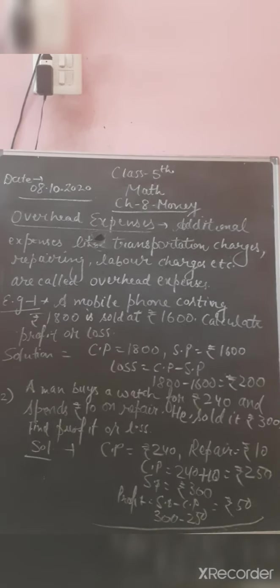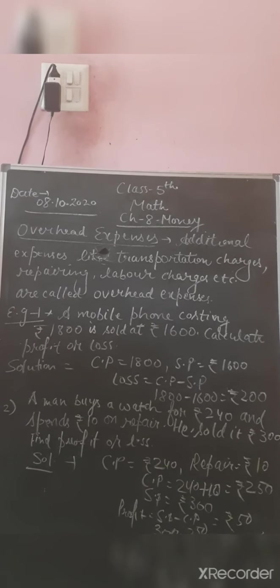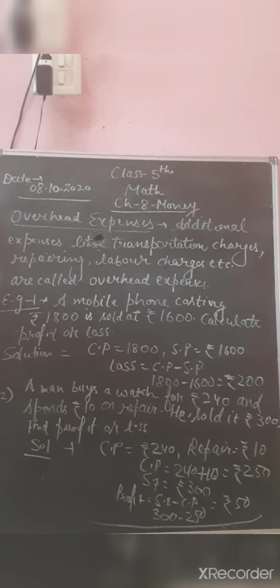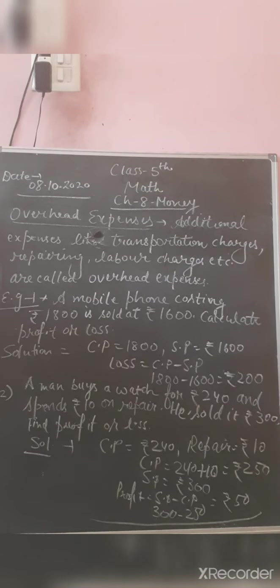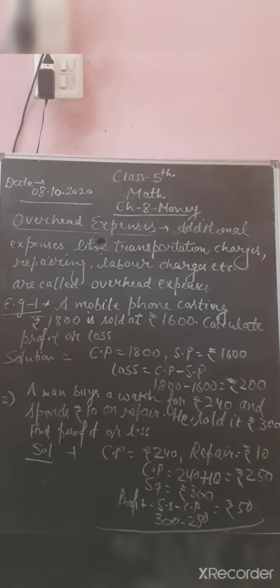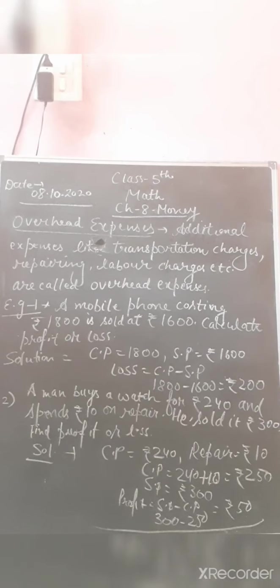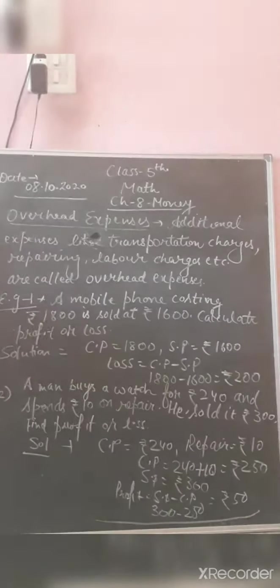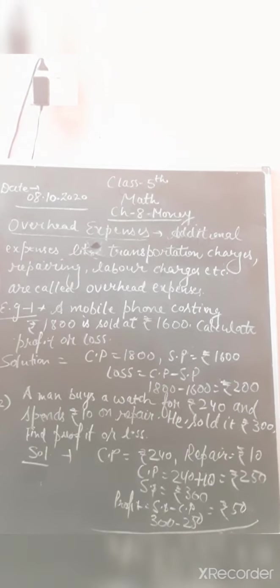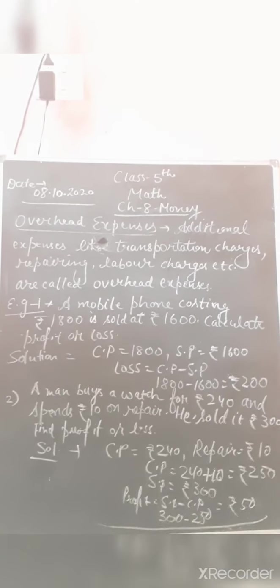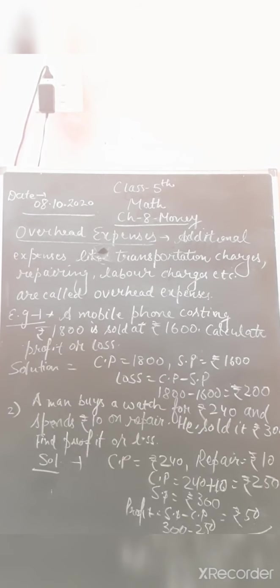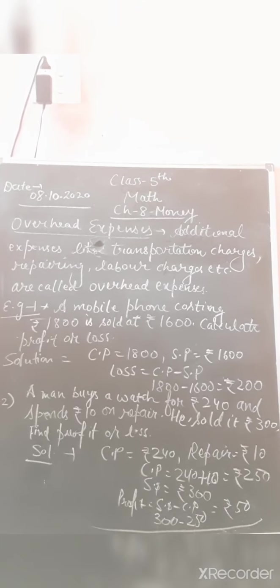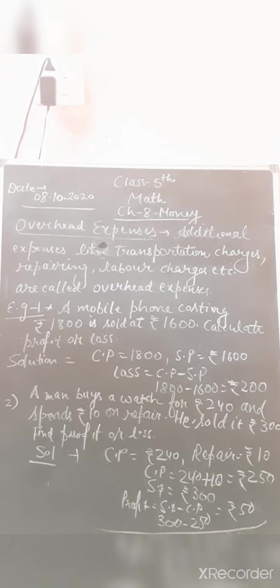Example one: a mobile phone costing 1800 rupees is sold at 1600 rupees — calculate profit or loss. Cost price = 1800 rupees; selling price = 1600 rupees. Since SP is less than CP, there is a loss. Loss = CP minus SP = 1800 minus 1600 = 200 rupees loss.